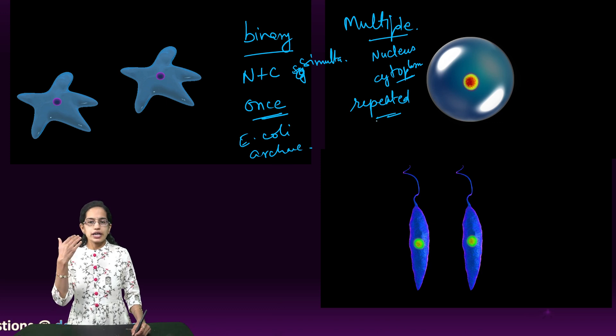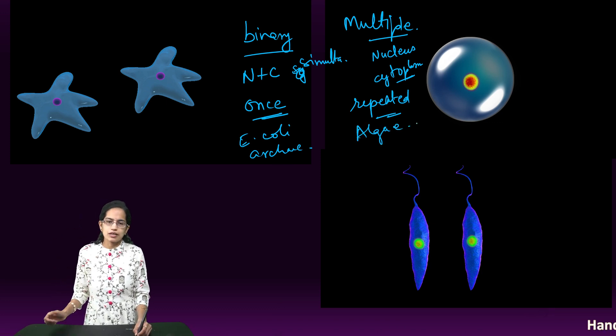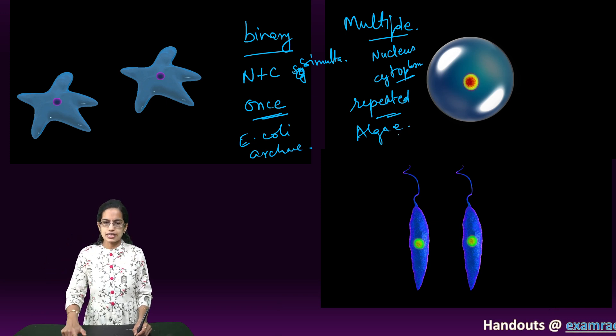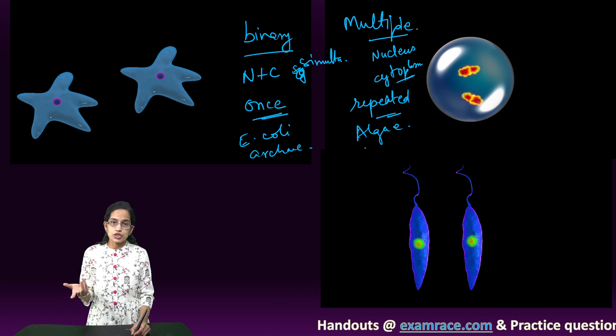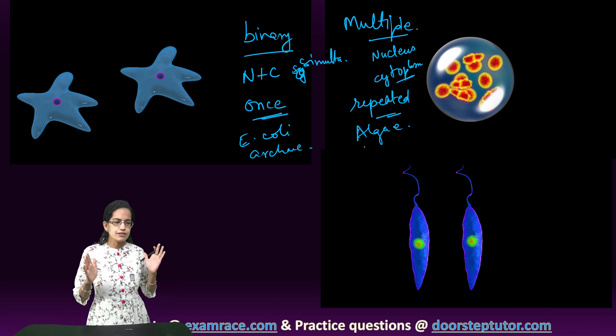In case of multiple fission, we have algae. Plasmodium is already there, we have taken this as an example. Then you have sporangias. So those are common examples of multiple fission.